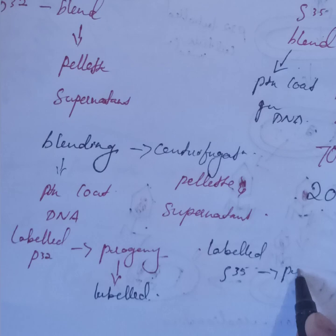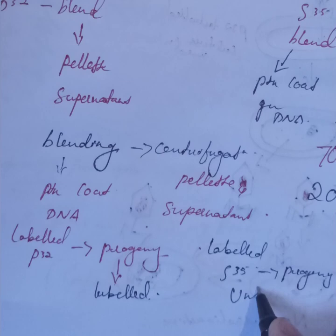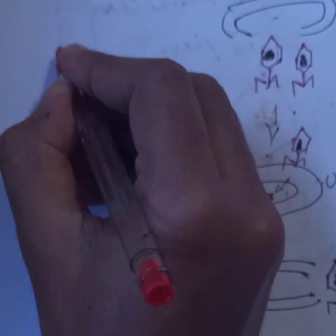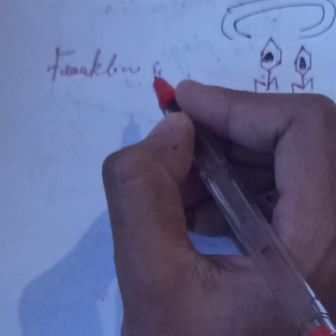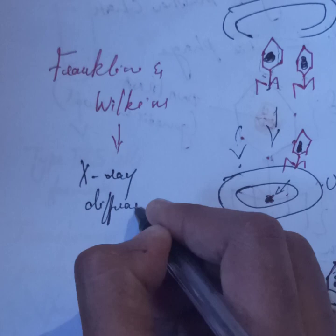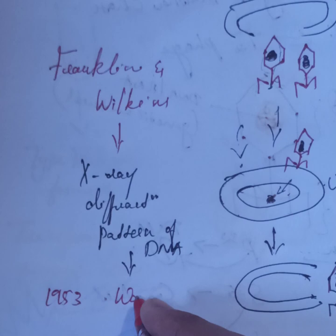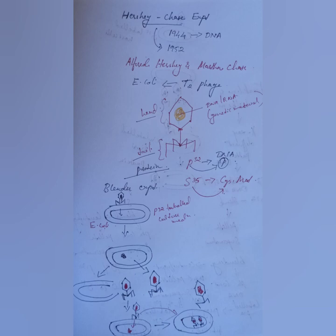So from this experiment — by infection, blending, and centrifugation — the genetic material is confirmed to be DNA, not protein. After this experiment, Rosalind Franklin and Wilkins revealed the X-ray diffraction pattern of DNA, and then in 1953 the structure of DNA was proposed by Watson and Crick. That's all about the Hershey and Chase experiment. I hope you all understand this lecture — if this video was useful for you, please like and share, and don't forget to subscribe to my channel.